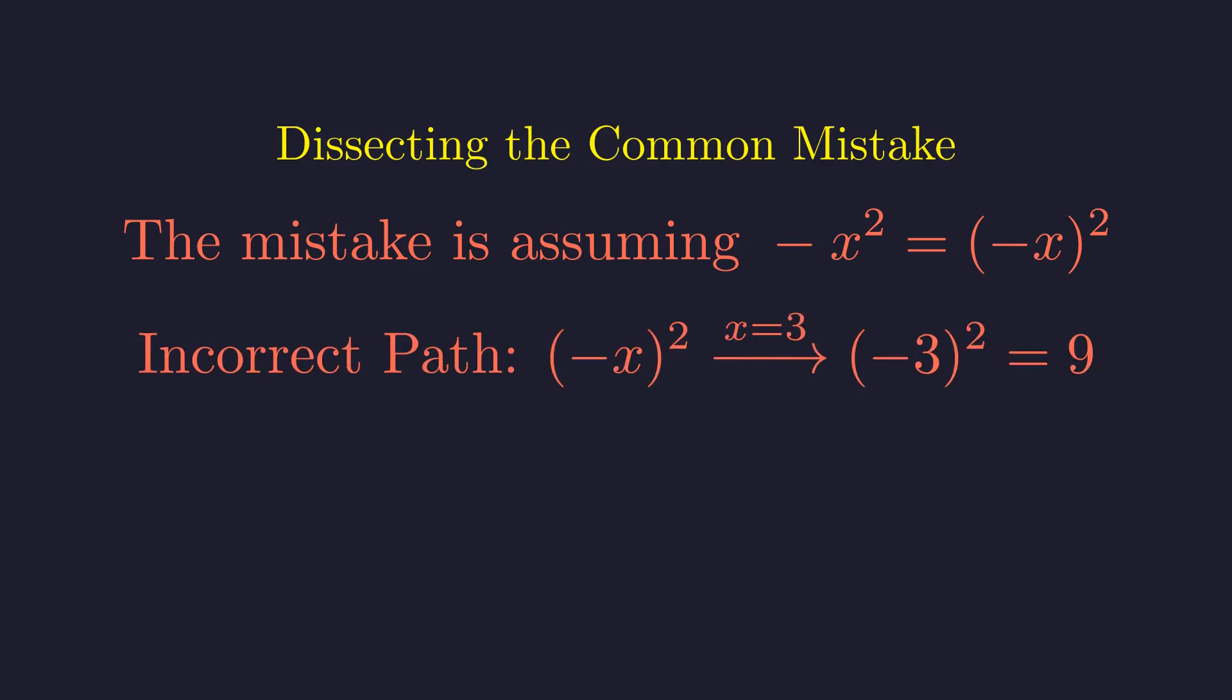If you follow this incorrect reasoning, you'd substitute 3 for x, get negative 3 squared, which gives you 9. But this is actually solving a different problem entirely.